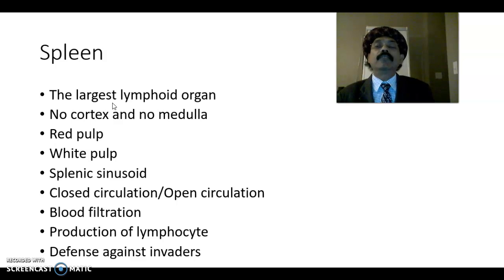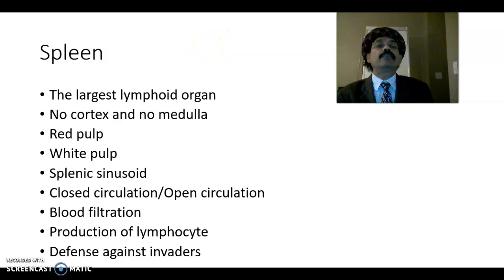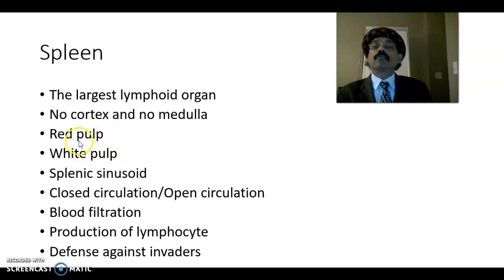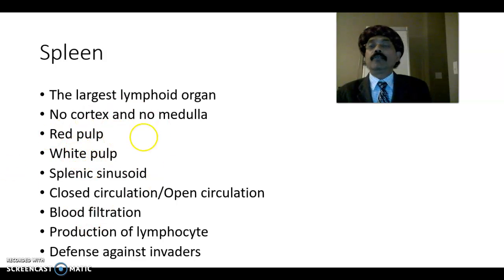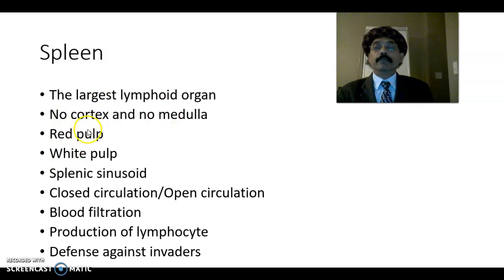We must recognize that the spleen is the largest lymphatic organ, but it has no cortex and no medulla — that is what differentiates it from the lymph node. It has red pulp and white pulp. More of the spleen is covered by the red pulp; the white pulp contributes a lesser part of the structure of the spleen. Red pulp and white pulp are intermingled together and have different functions.